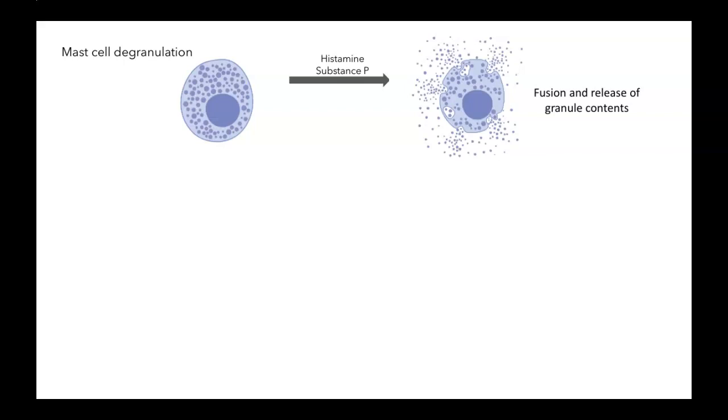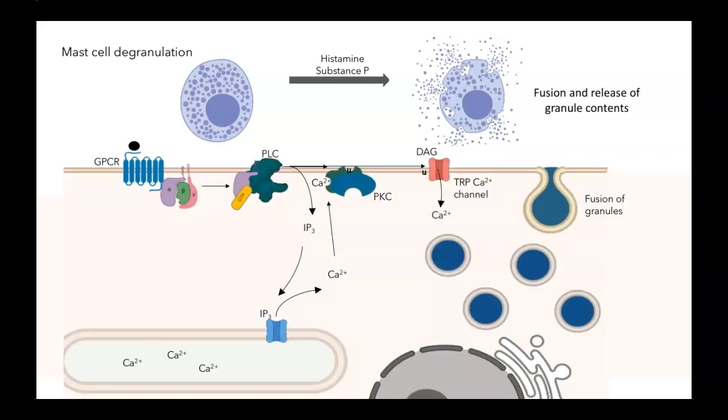How do histamine or substance P lead to this change? That involves this pathway. When the signaling molecule binds to GPCR, it activates it, activating phospholipase C, leading to an increase in IP3 and DAG. That IP3 can lead to the release of calcium and increase the cytoplasmic calcium levels. In this system, in this cell, there's a role for DAG as well.